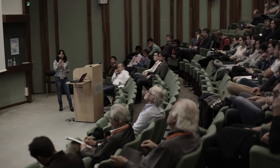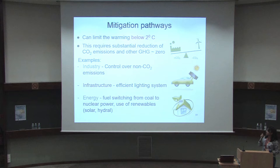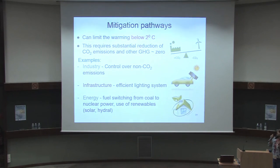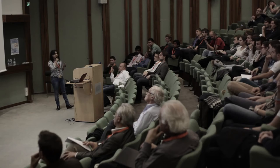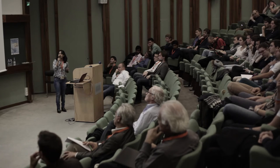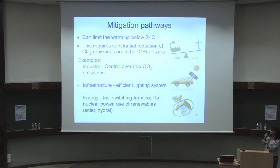For mitigation pathways — mitigation is a very strong scenario that can actually limit global warming below 2 degrees Celsius. It has potential but, to do this, we require a substantial reduction of CO2 and GHG emissions. If we start from today, we need to bring emissions absolutely to zero level.